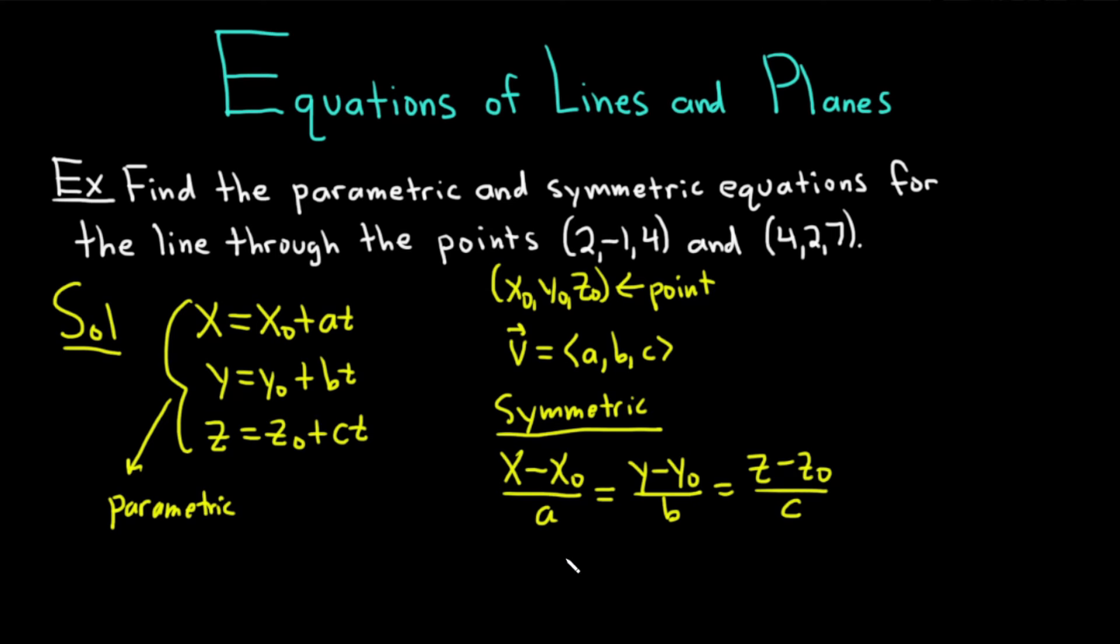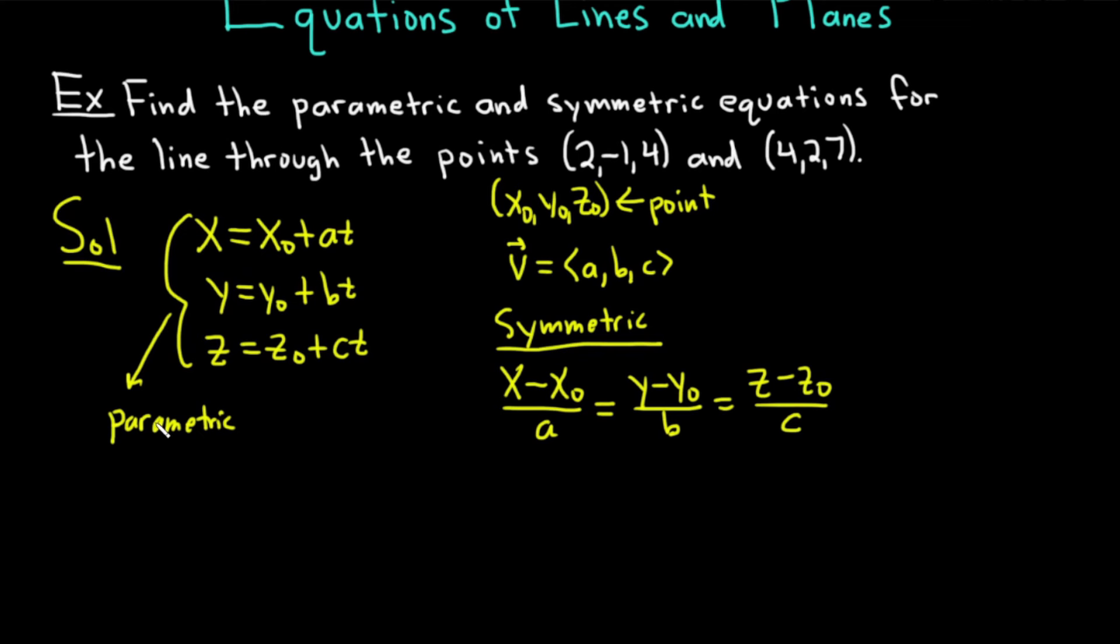The third one is (z - z₀)/c. So to do this problem, we basically just need a point, which we already have. We can use either point. And we need a parallel vector. Let's go ahead and find our parallel vector first.